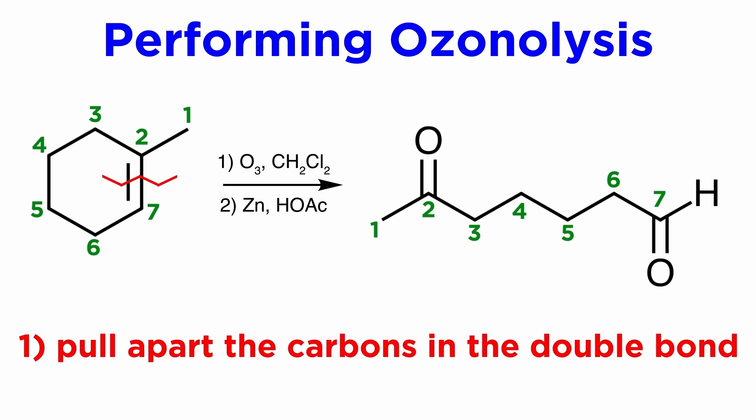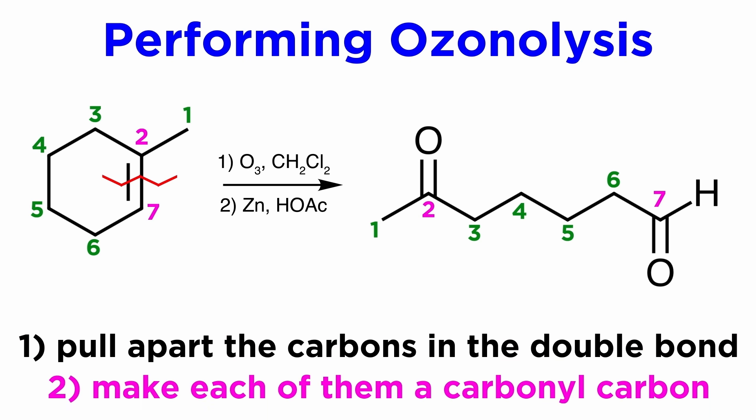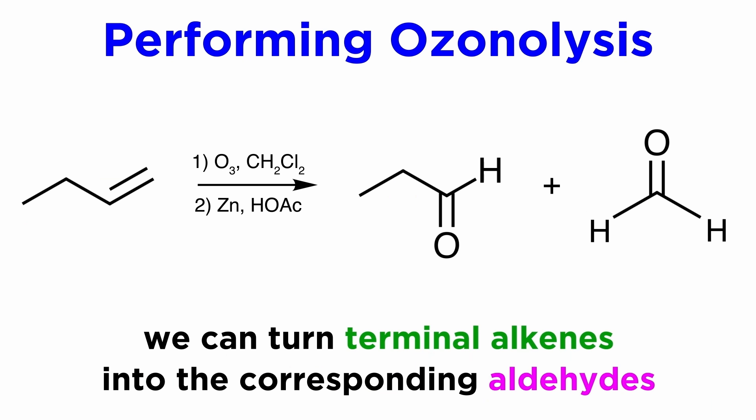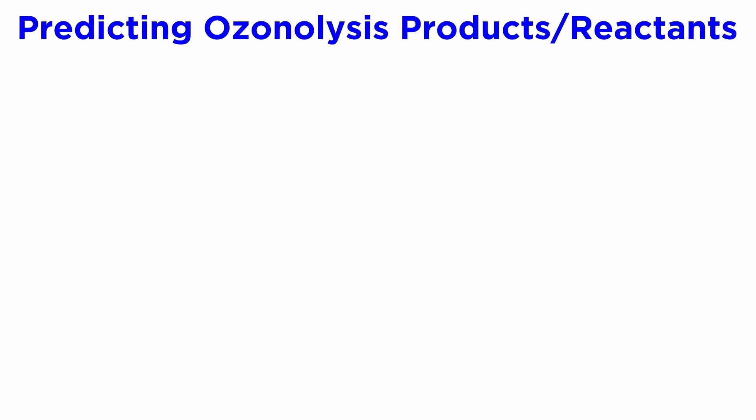Besides this, we simply pull the molecule apart at the double bond, tack on carbonyls, and that's the reaction. Some applications include transforming terminal alkenes into aldehydes, such as we see here. It will be important to practice drawing both products and reactants, given some information about a reaction.